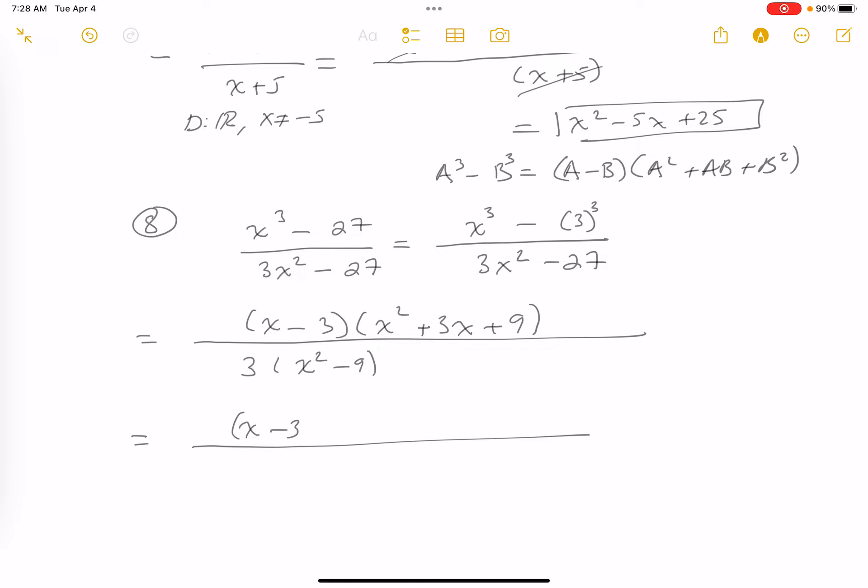x minus 3, x squared plus 3x plus 9. 3 times x squared minus 9 is a difference of perfect squares, so x plus 3, x minus 3.